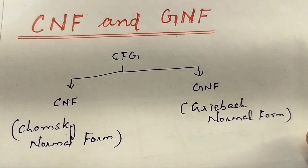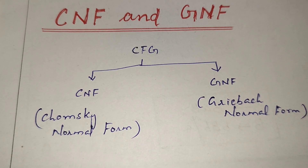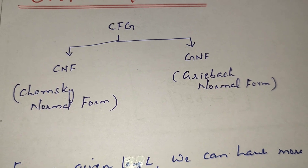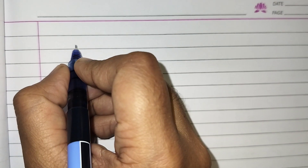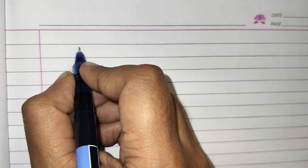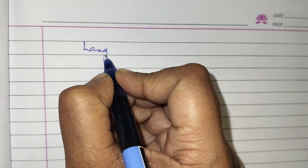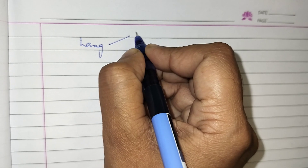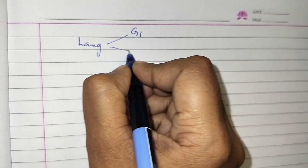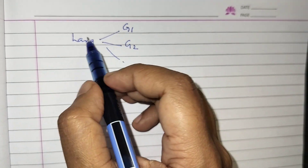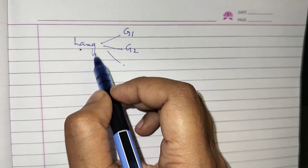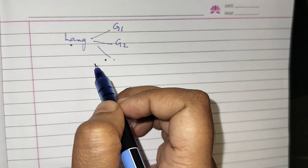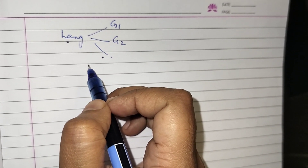The next topic is CNF and GNF. CNF means Chomsky Normal Form and GNF means Greibach Normal Form. For any given language — we are discussing context-free languages — we can have more than one possible grammar. That is, the same language can be generated by grammars G1, G2, etc. So many grammars can produce the same language.